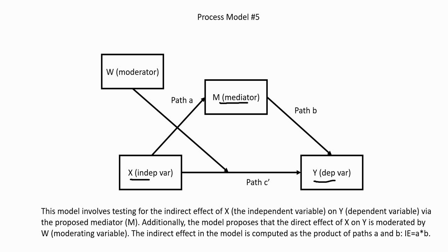We can test the indirect effect of X on Y through the mediator, and that effect is computed as a product of path coefficients for path A and path B. You'll also notice that we have a moderator included in the model, but in this case the moderator is moderating only the direct effect of the independent variable on the dependent variable — essentially path C is being moderated — meaning the relationship between the independent variable and the dependent variable changes across levels of the moderator W.